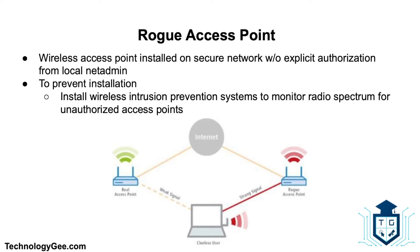A rogue access point is a wireless access point that has been installed on a secure network without explicit authorization from a local network administrator, whether added by a well-meaning employee or by a malicious attacker. To prevent the installation of rogue access points, organizations can install wireless intrusion prevention systems to monitor the radio spectrum for unauthorized access points.